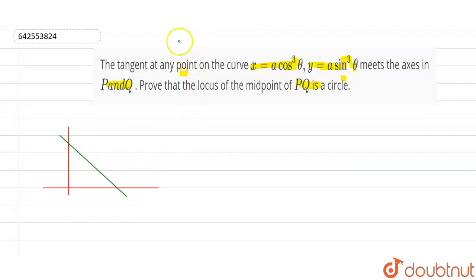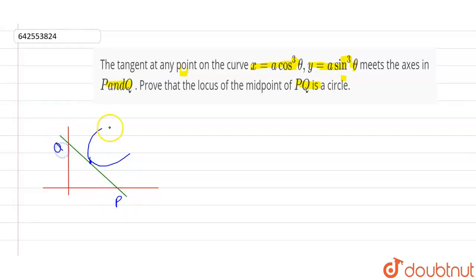So basically what it is saying: there's a curve which is going like this, and this is the meeting point of this curve. These are the intercepts here — P and Q. So the question is trying to say the tangent at any point of the curve meets the axis in P and Q.